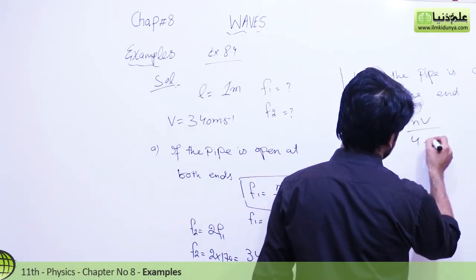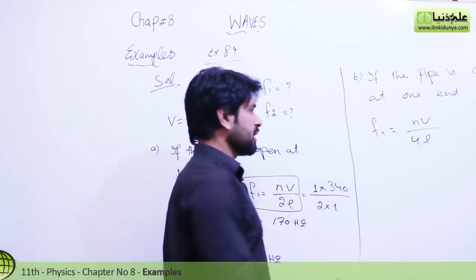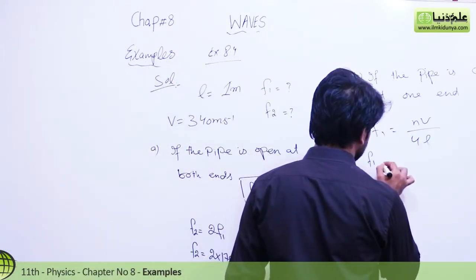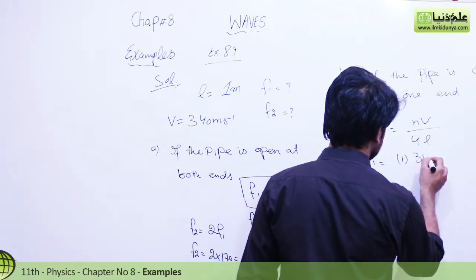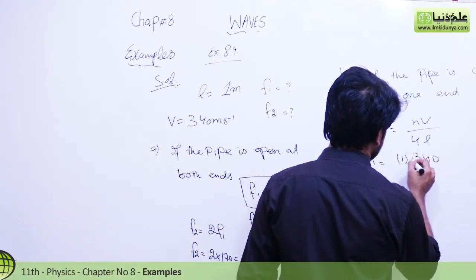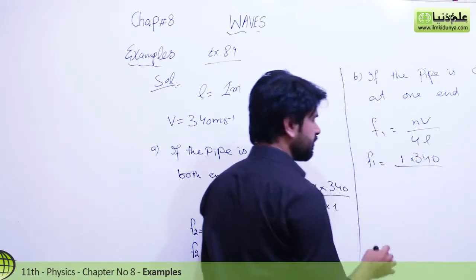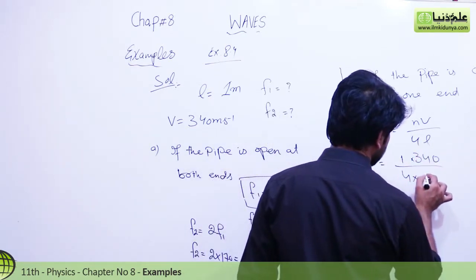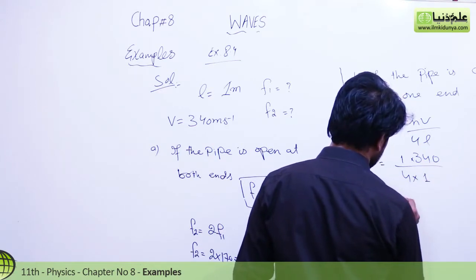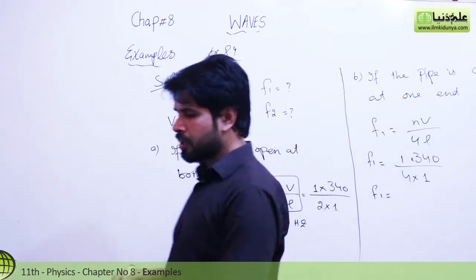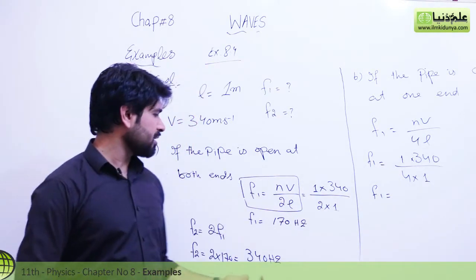For a closed pipe, the fundamental frequency formula is f1 = nV / 4L. Substituting n = 1, V = 340, and 4L = 4 × 1, we can find the first fundamental frequency.